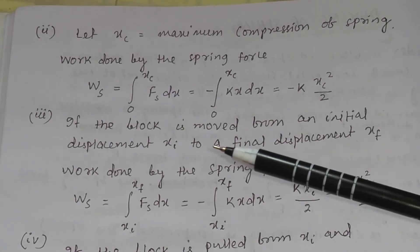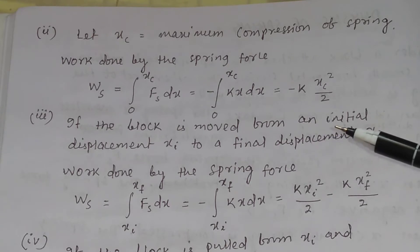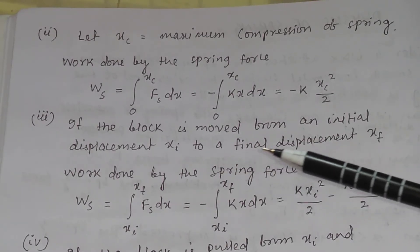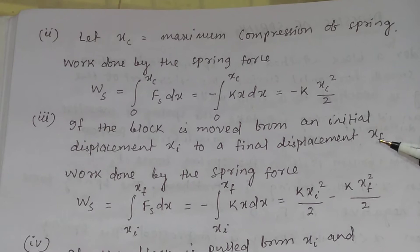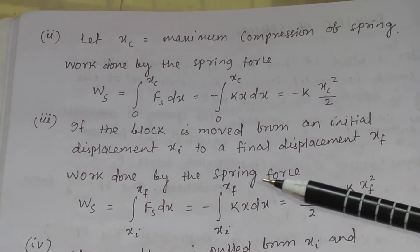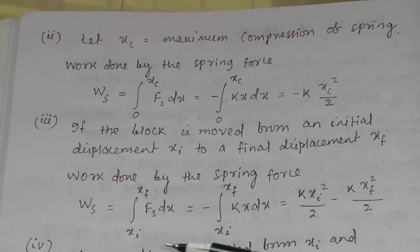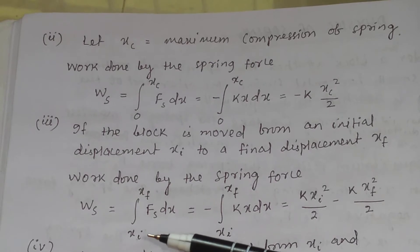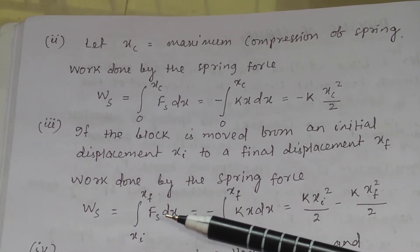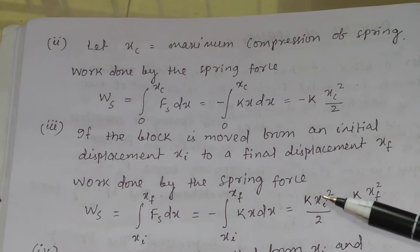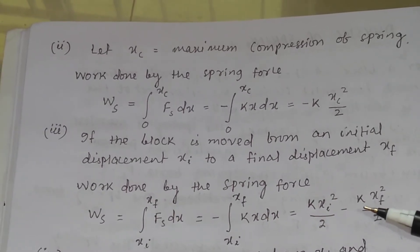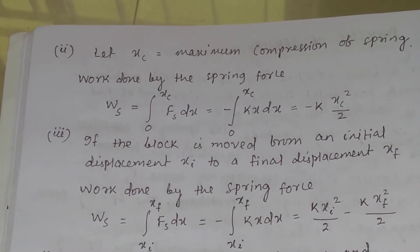If a block is moved from an initial displacement xi to a final displacement xf, then the limits of integration will be from xi to xf, and the work done will be equal to ½kxi² minus ½kxf².